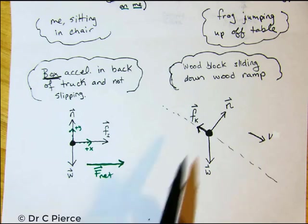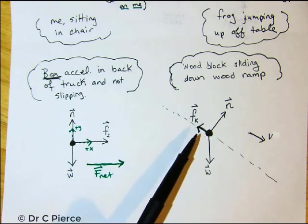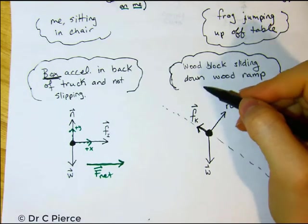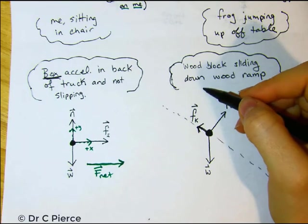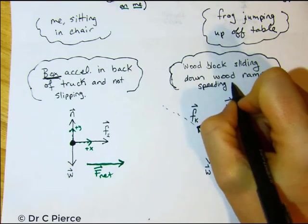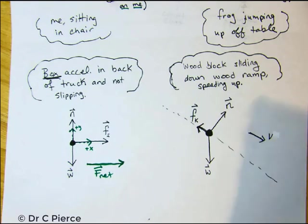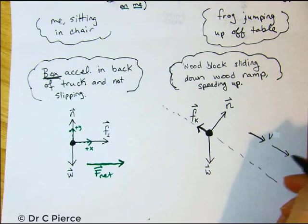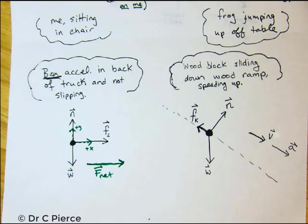Or it could be sliding down the ramp and slowing down. Like what if somebody had pushed it down the ramp, but then kinetic friction is going to slow it down and re-stick it to the ramp. We don't really know yet. How about I go back and I add that in. And let's say that it is speeding up. If it's going to speed up, that means that the acceleration is in the direction of the velocity. If the acceleration is down the ramp, it means the net force is down the ramp.